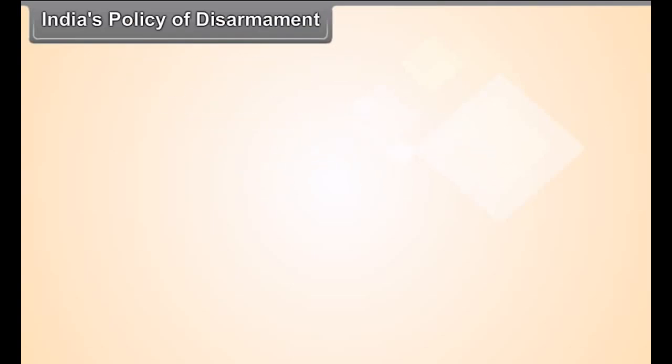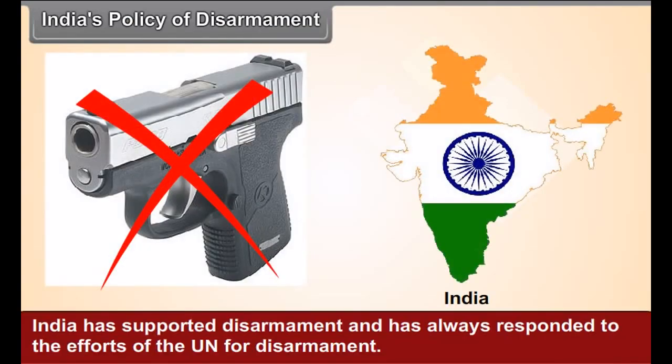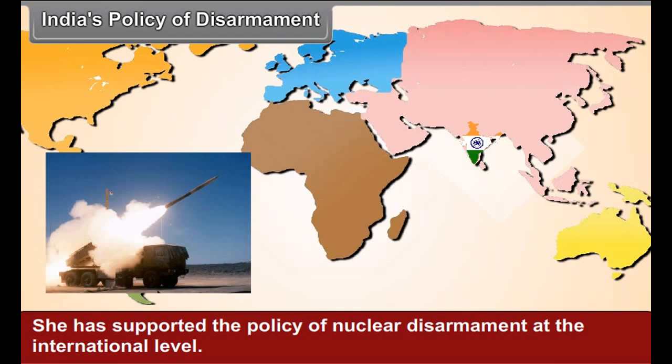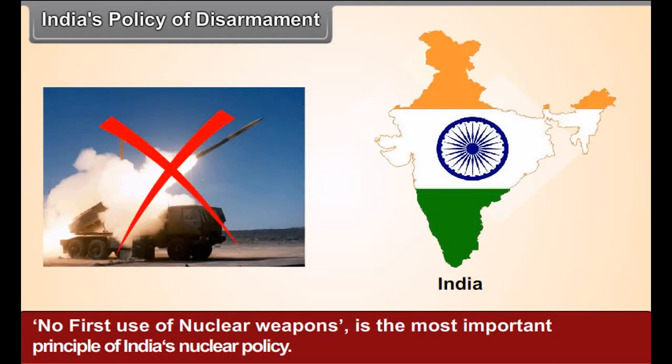India's Policy of Disarmament: India has supported disarmament and has always responded to the efforts of the UN for disarmament. India has a principled opposition to nuclear weapons because the world faces the threat of a nuclear war. She has supported the policy of nuclear disarmament at the international level. No first use of nuclear weapons is the most important principle of India's nuclear policy.